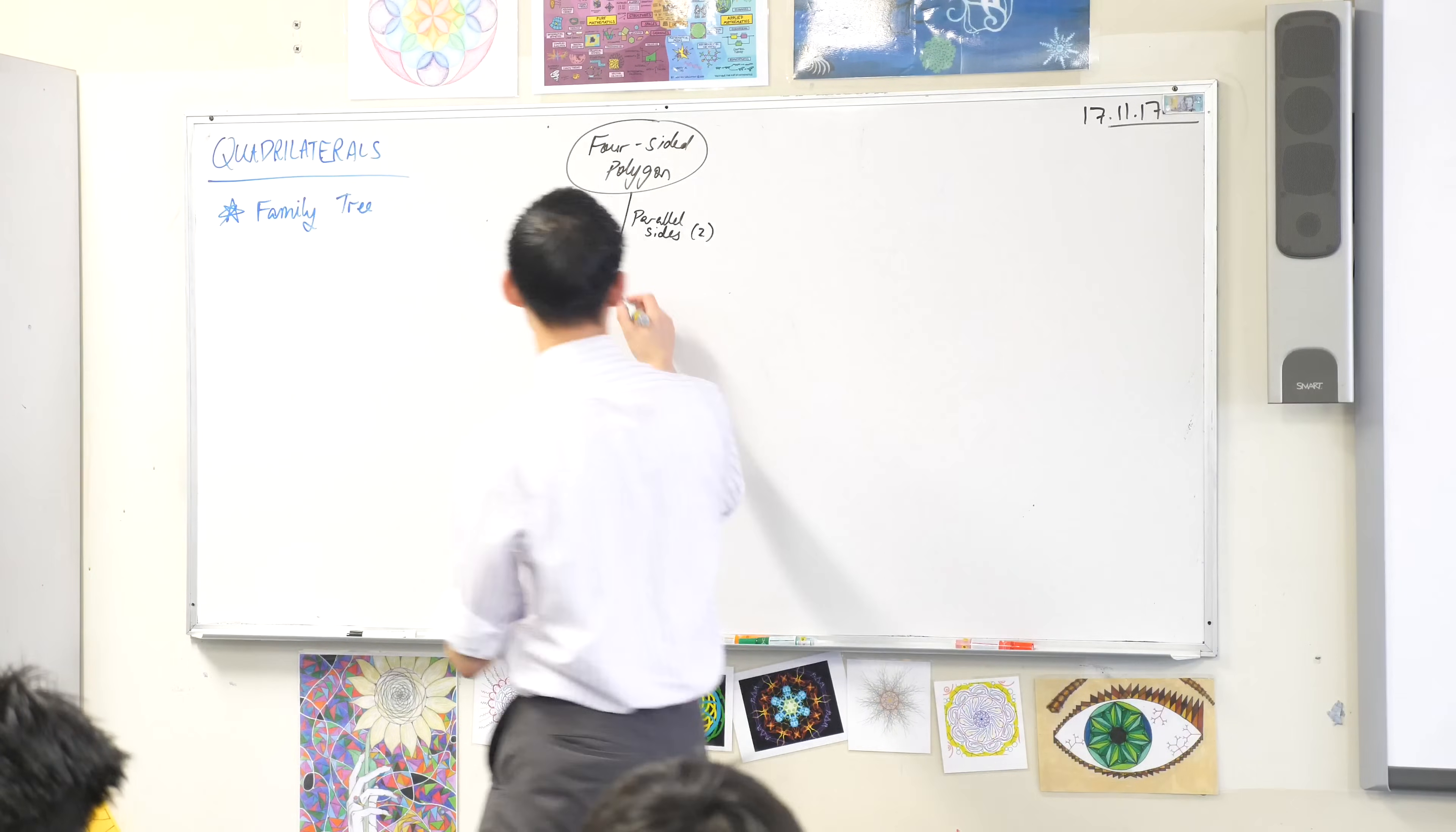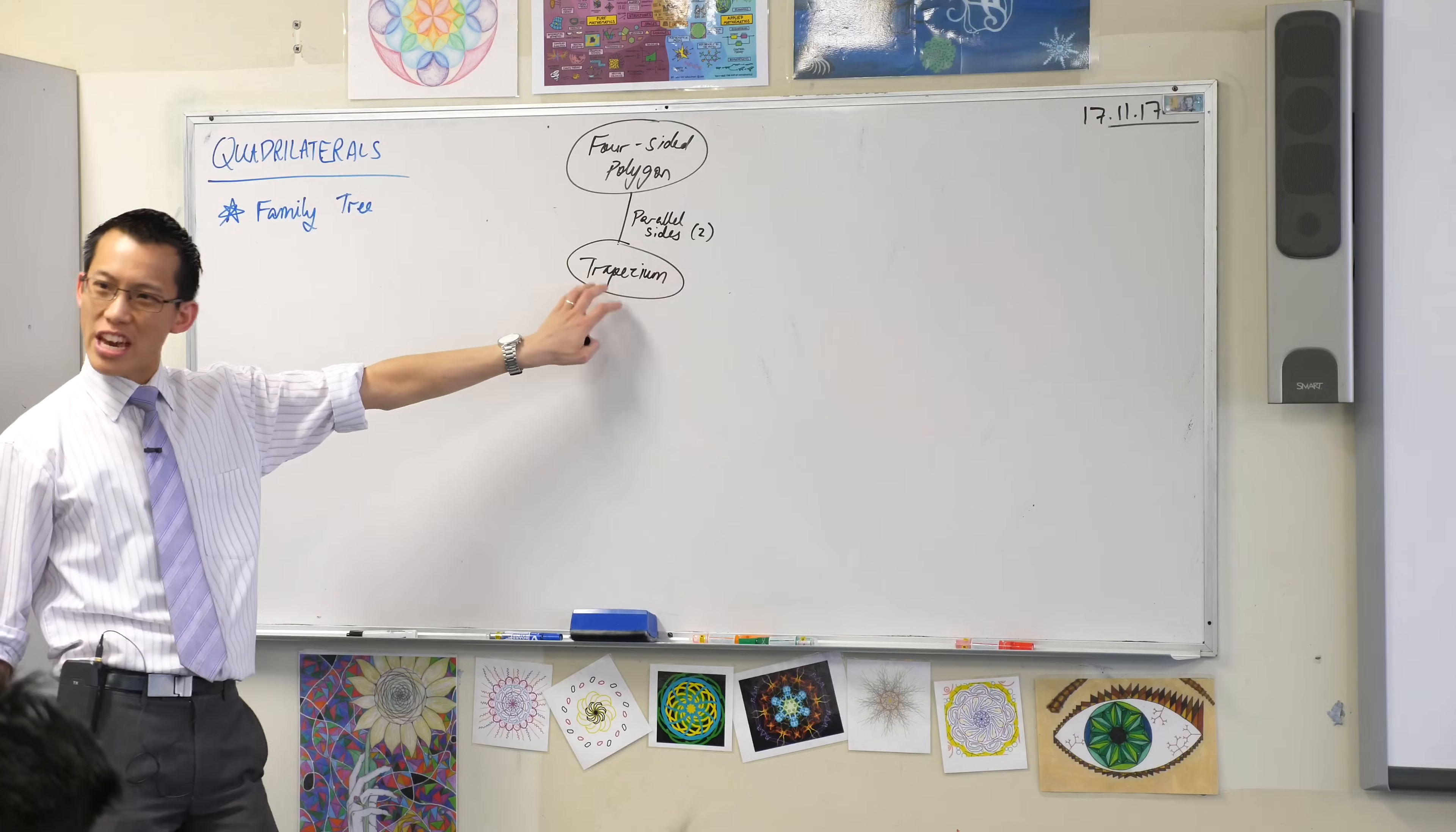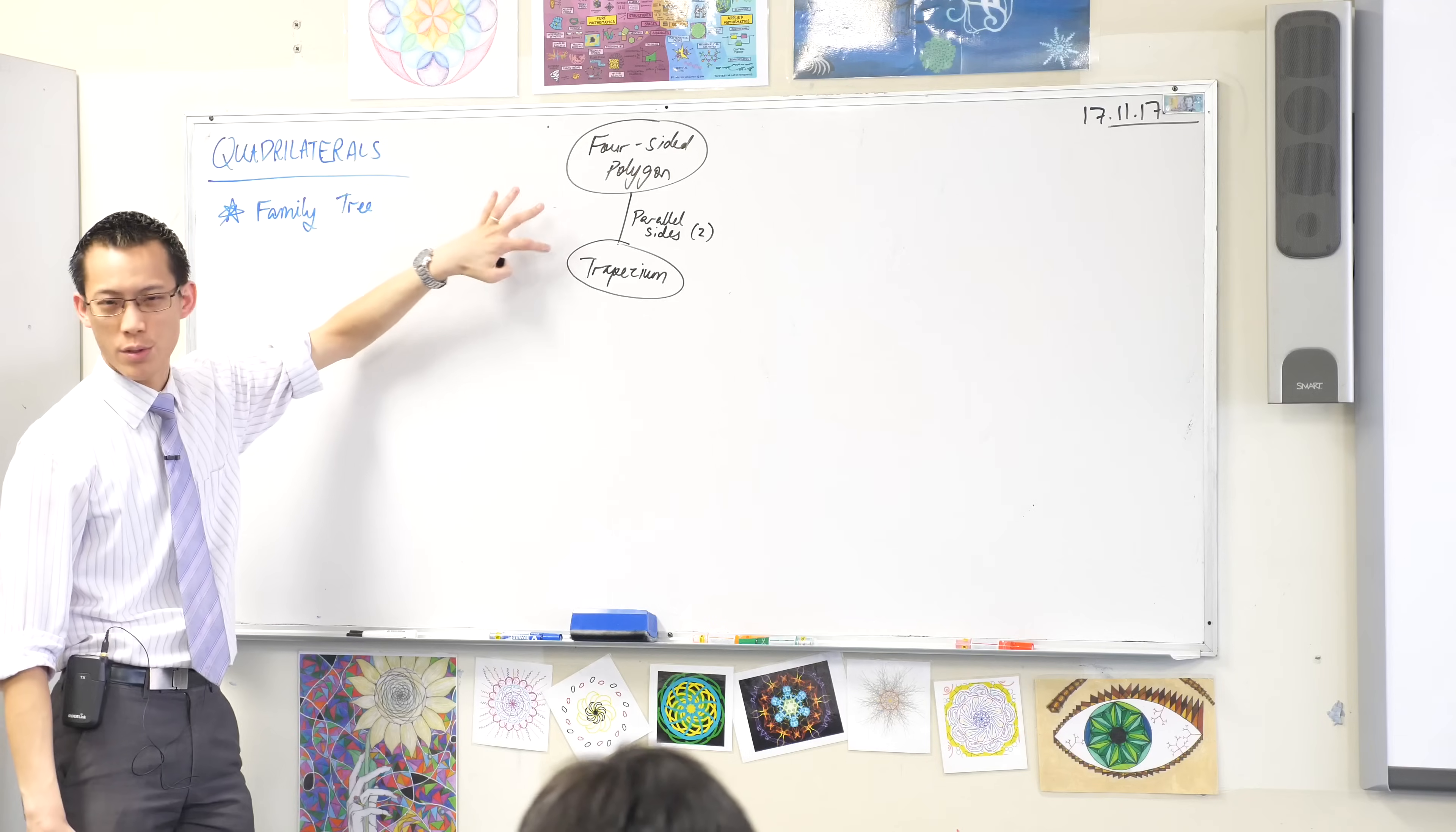It's a trapezium. Very good, let's label that in. Trapezium. Like so. And so this shape you can see is more special than this one. It's got this characteristic in it. So it's a trapezium.